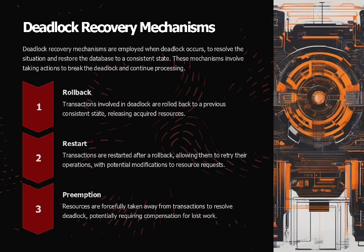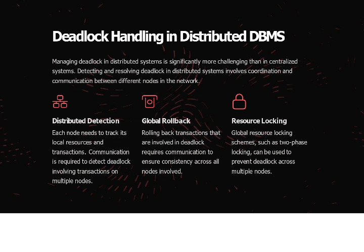Deadlock recovery mechanisms are employed when deadlock occurs to resolve the situation and restore the database to a consistent state. These mechanisms involve taking actions to break the deadlock and continue processing. First, rollback: transactions involved in deadlock are rolled back to a previous consistent state, releasing acquired resources. Second, restart: transactions are restarted after a rollback, allowing them to retry their operations with potential modifications to resource requests. Third, preemption: resources are forcefully taken away from transactions to resolve deadlock, potentially requiring compensation for lost work.